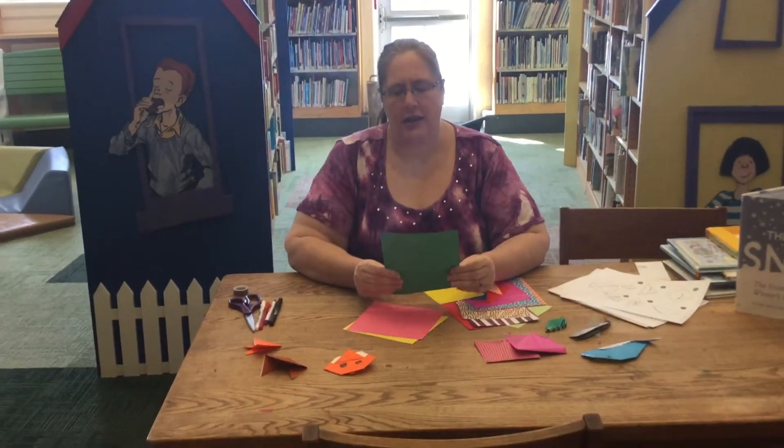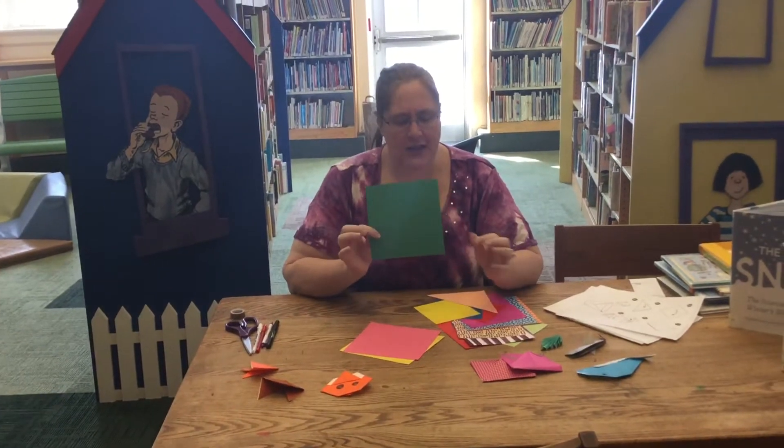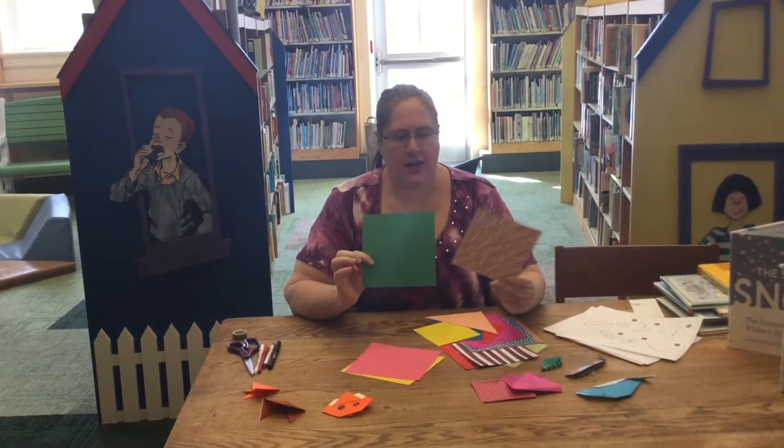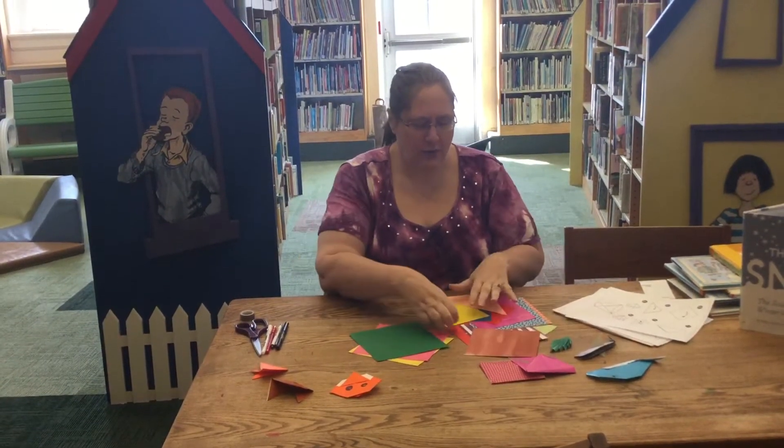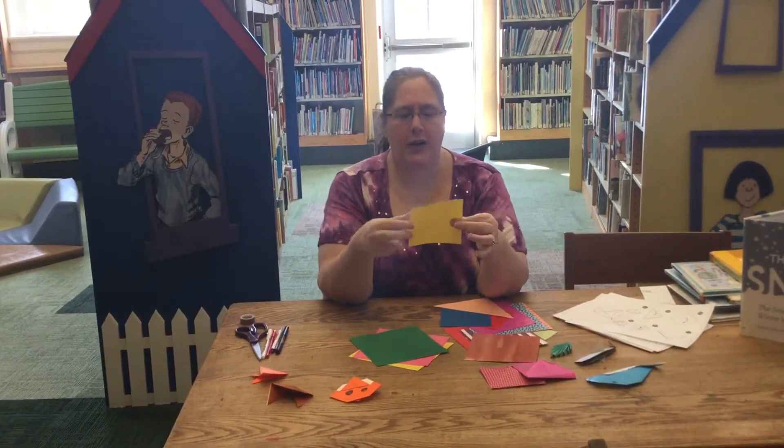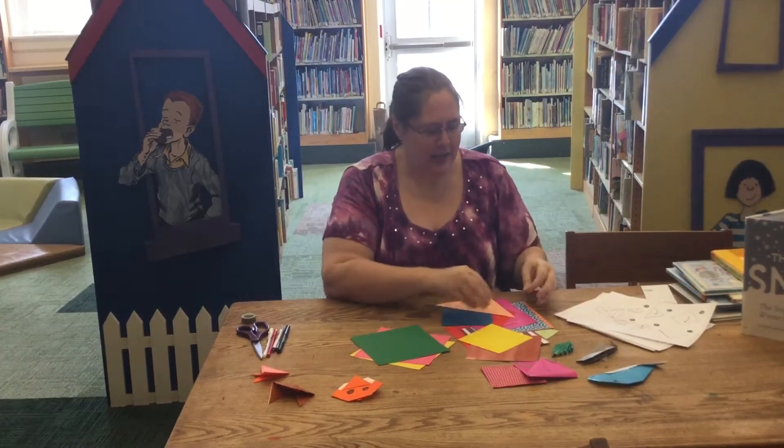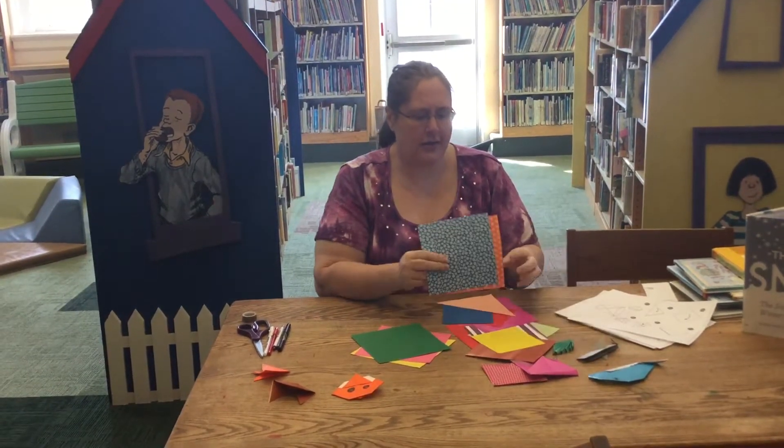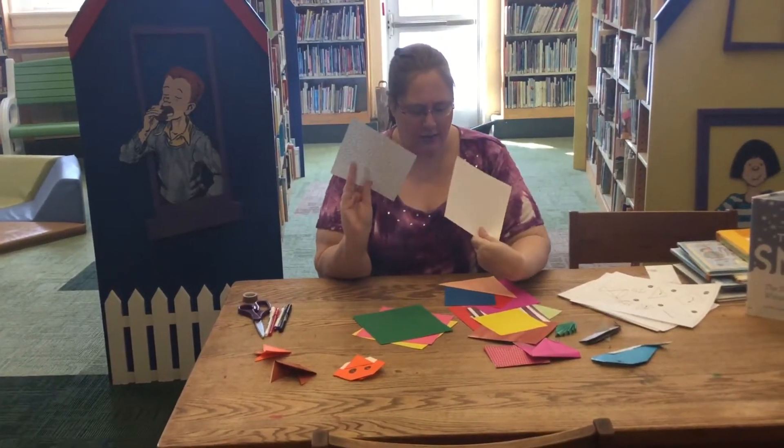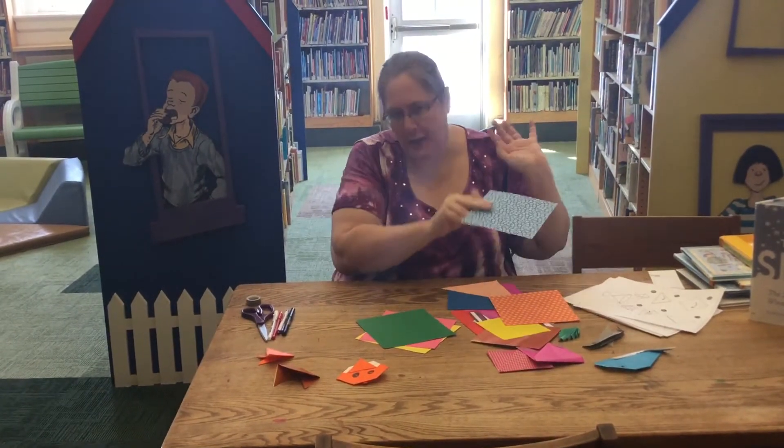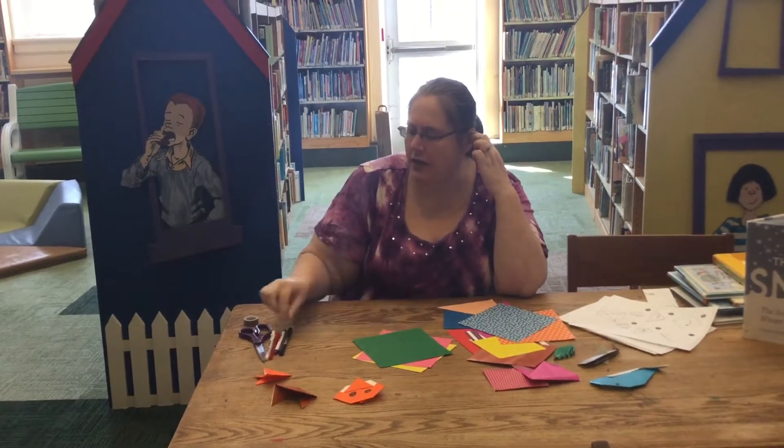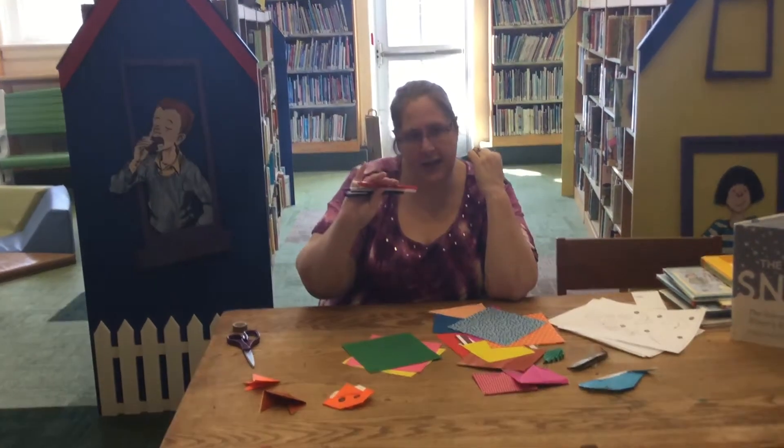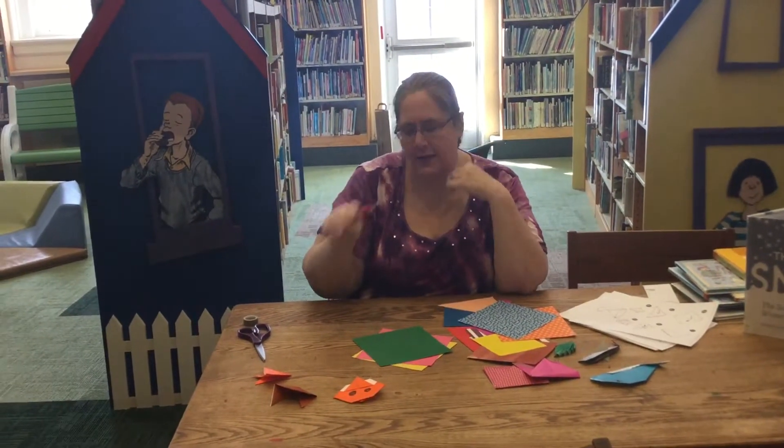We've got thicker origami paper, thick cardstock with patterns on both sides, smaller squares of thinner paper, and ones decorated on one side. We've got basically all kinds of stuff.